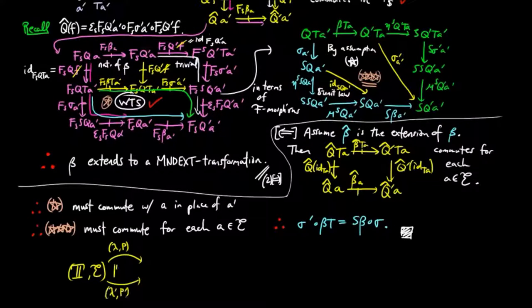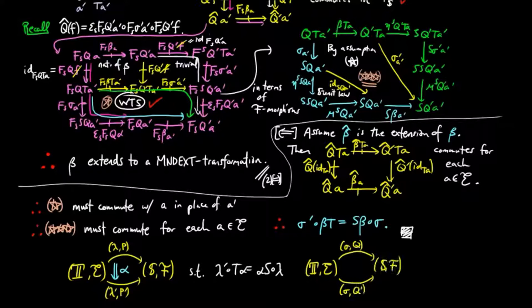So note that we can give all the one- and two-categorical data for monad lifts and monad extensions entirely in terms of the base functors and natural transformations, and we do not need to work with explicit lifts or extensions.